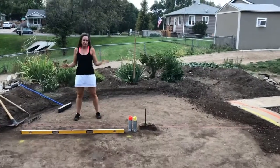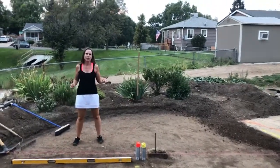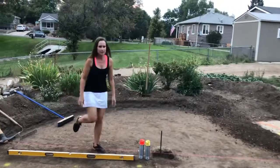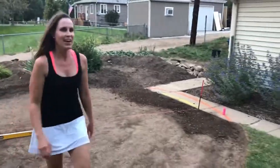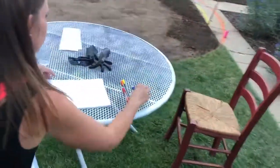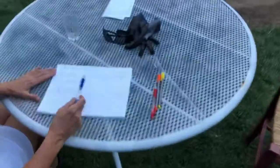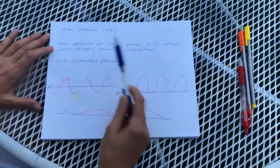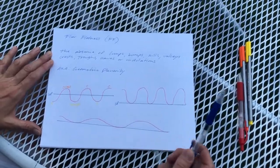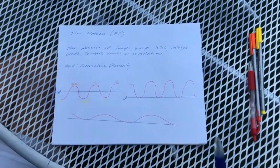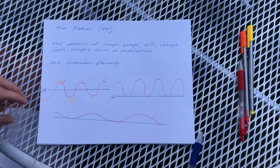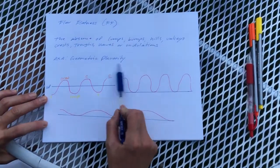In this video, I'm going to introduce the concept of floor flatness. Let's go over here and we'll look at a diagram. Floor flatness, known as FF in the industry, is the absence of lumps, bumps, hills, valleys, crests, troughs, waves, or undulations. It's also known as geometric planarity.